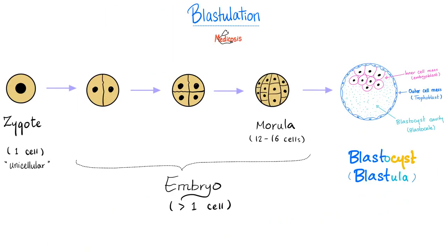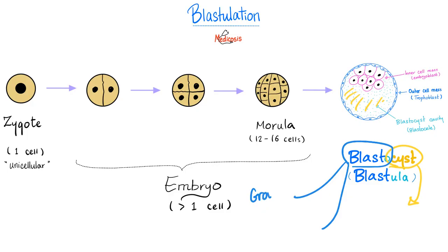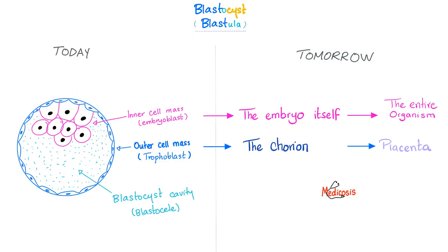After cleavage comes blastulation — the formation of the blastocyst or blastula. The word 'cyst' means cavity; you can see a cavity here filled with fluid. The word 'blast' can mean growth or immature. The blastocyst is made of an inner cell mass and an outer cell mass, with a cavity known as the blastocyst cavity or the blastocele.